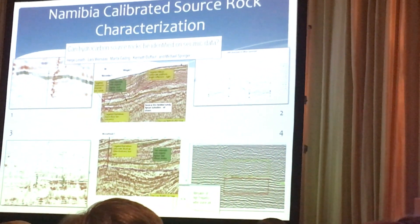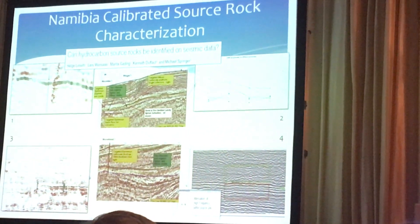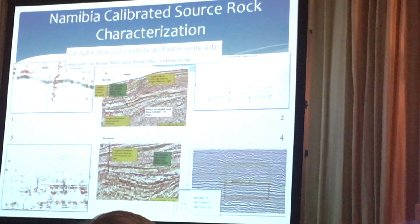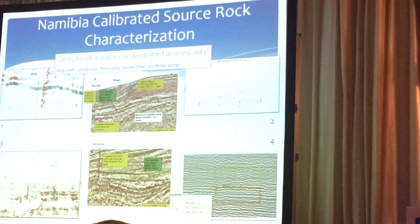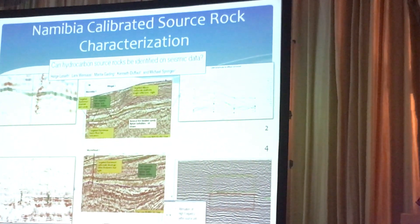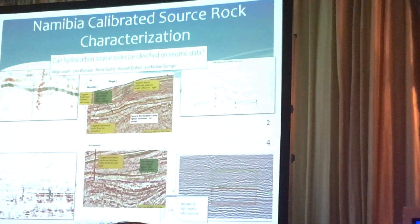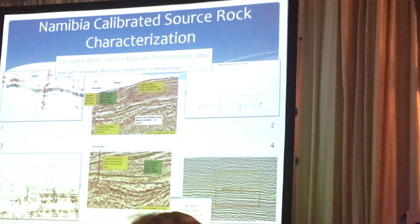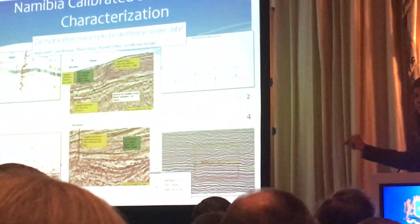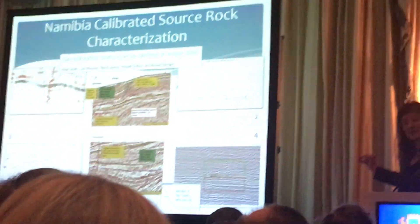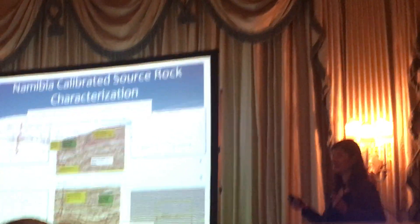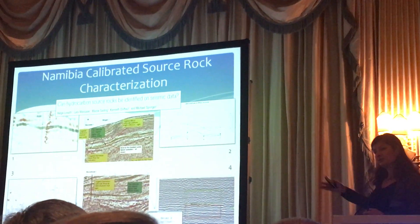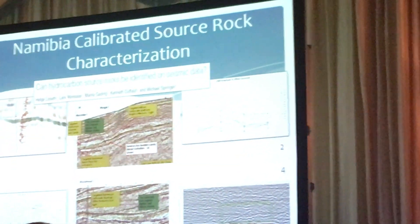In 2011, Loza et al., a group of Equinor — then Statoil — employees, published an amazing paper that changed the way we work in Spectrum. The question was very simple: can hydrocarbon source rocks be identified on seismic data? It's a very fair question because as an industry we have really focused on just looking at the reservoir, identifying the reservoir, and looking for amplitude anomalies associated with the reservoir — which is very fair because, after all, we want accumulations. But seismic data holds amazing clues and a lot of information on the source rock.